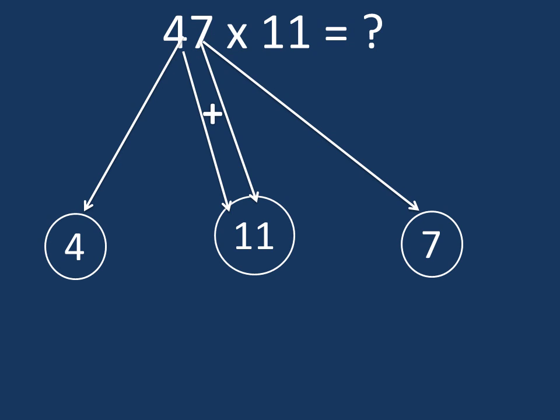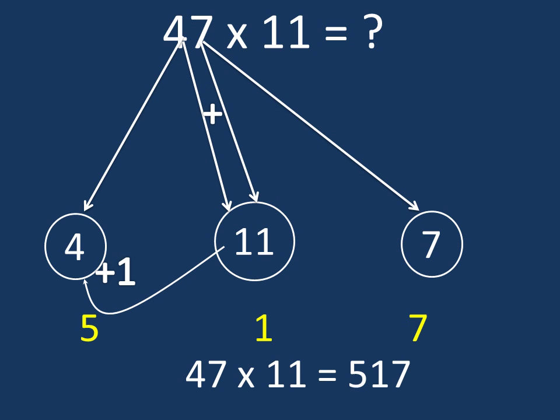Next, the last digit is 4, put it on the left side. From 11, 1 will be carried to 4. 4 plus 1 will be 5. So the result will be 570.